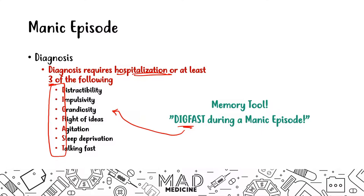If a patient feels distracted, has a flight of ideas, and is sleep-deprived, they are right off the bat having a manic episode — so long as this lasts greater than one week. One week is the key timeline. Timeline matters in psychiatry, and it has to last greater than one week to qualify as a manic episode.